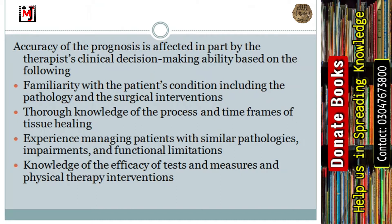For example, if a patient has had a heart attack, we need to know their condition — if a patient comes with a third-degree heart attack and requires bypass surgery, we have to think about the surgical interventions as well. We also need to know the natural disease course — how long healing will take — for conditions like heart attack, fractures, diabetes, and hypertension. We consider patients with similar pathologies, impairments, and functional limitations to design a good prognosis.